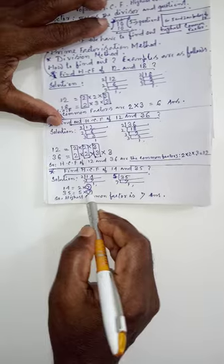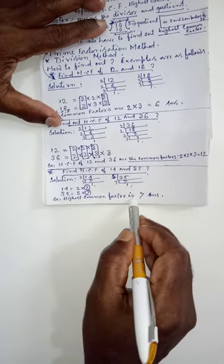So the common factor is 7. Therefore, the highest common factor is 7. That's all for the day.